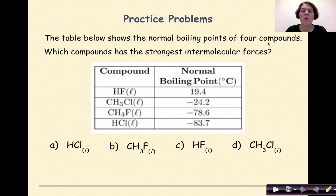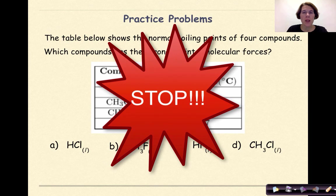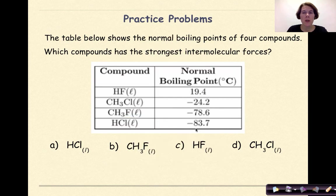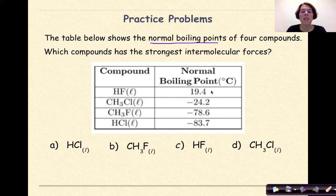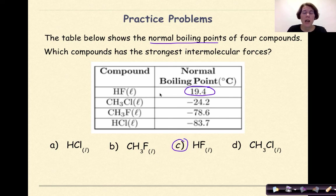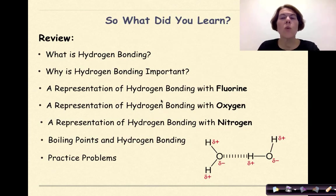The table below shows the normal boiling points of four compounds. Which compound has the strongest intermolecular forces? We have HF, CH3Cl, CH3F, and HCl, each with boiling points represented next to them. Based on the information given, we are looking for the compound with the highest boiling point. HF has the highest boiling point, therefore that has to be the correct answer. HF is also the only compound here that experiences hydrogen bonding as its intermolecular force.